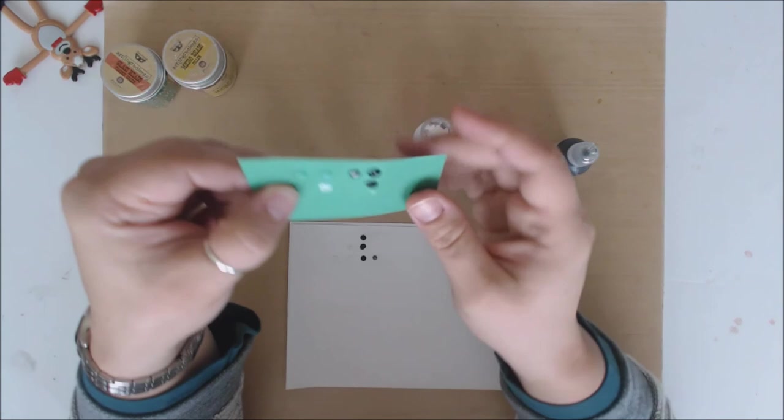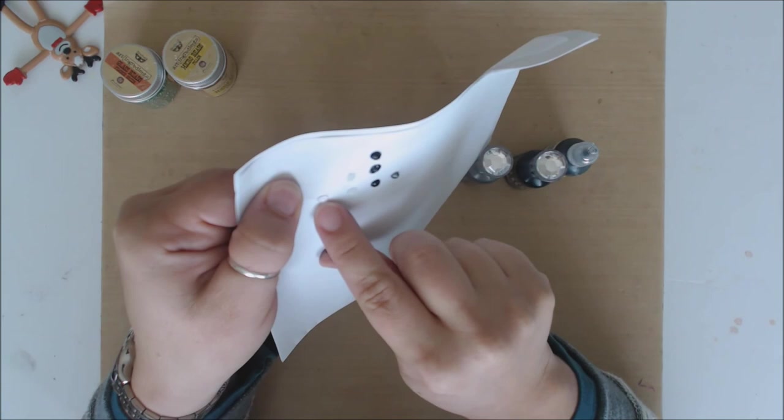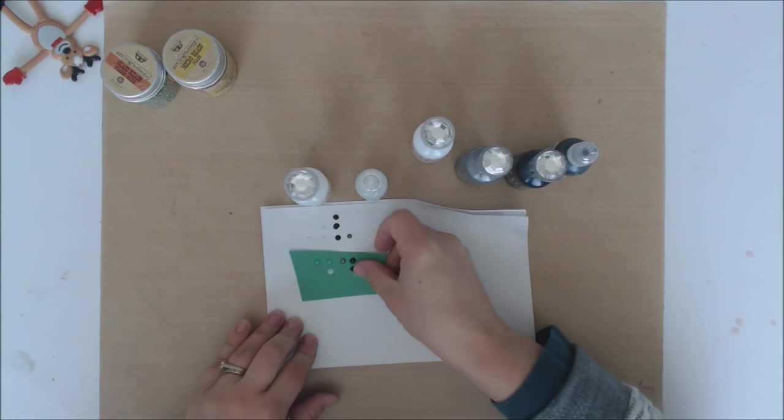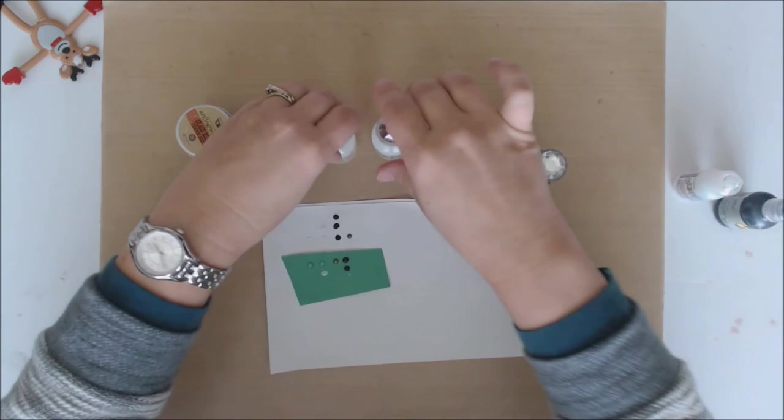The clear one looks like just a little tiny dew drop. It almost looks like if you took a hot glue gun and left a little drop on your paper. That's what it would look like, but you don't have to worry about the heat. But that's the effect that it has.